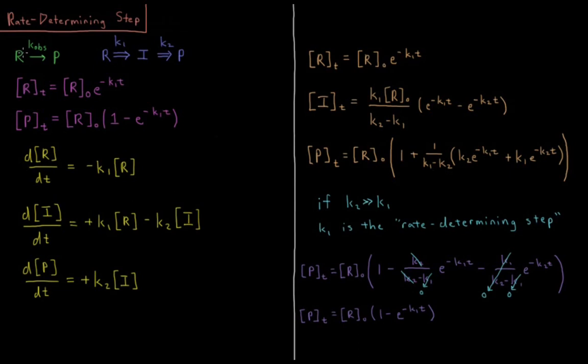We're going to assume this is composed of a sequence of two elementary reactions, R going to the intermediate I, and the intermediate going to the product, with rate constants of k1 and k2 along the way.